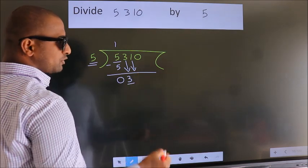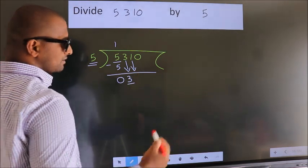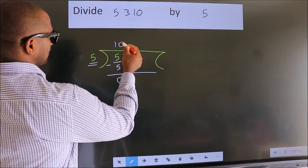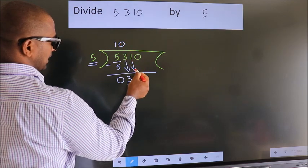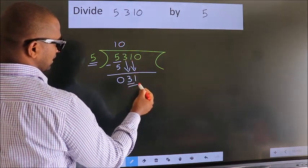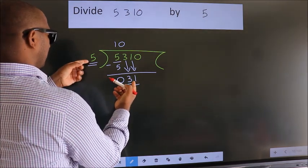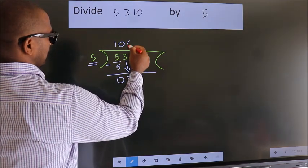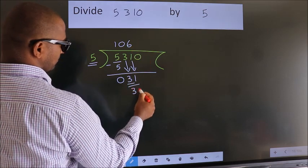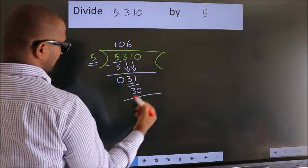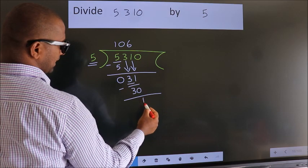The rule to bring down the second number is to put 0 here first. Then only we can bring down this number, so 31. A number close to 31 in the 5 table is 5 times 6, which is 30. Now we subtract and get 1.